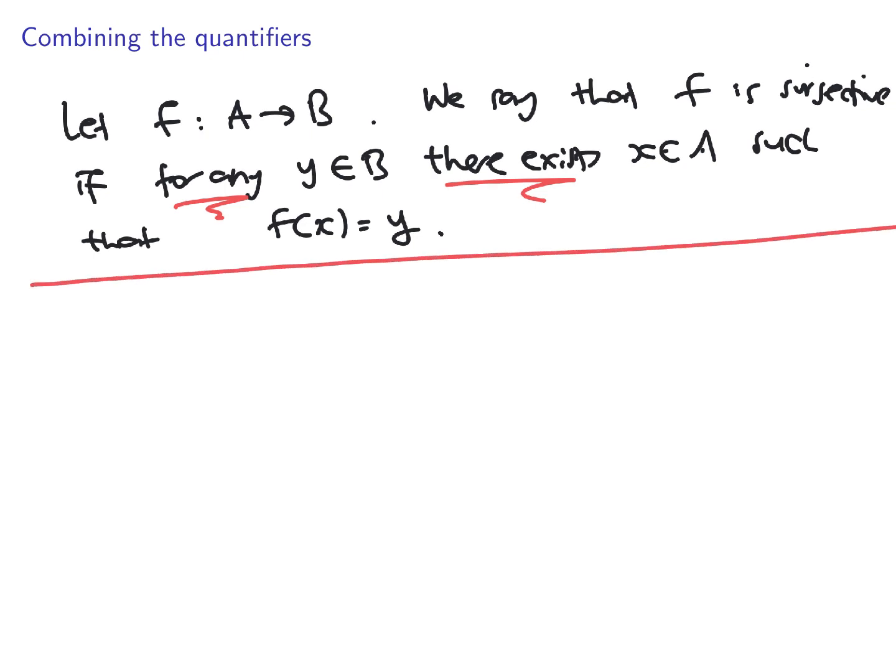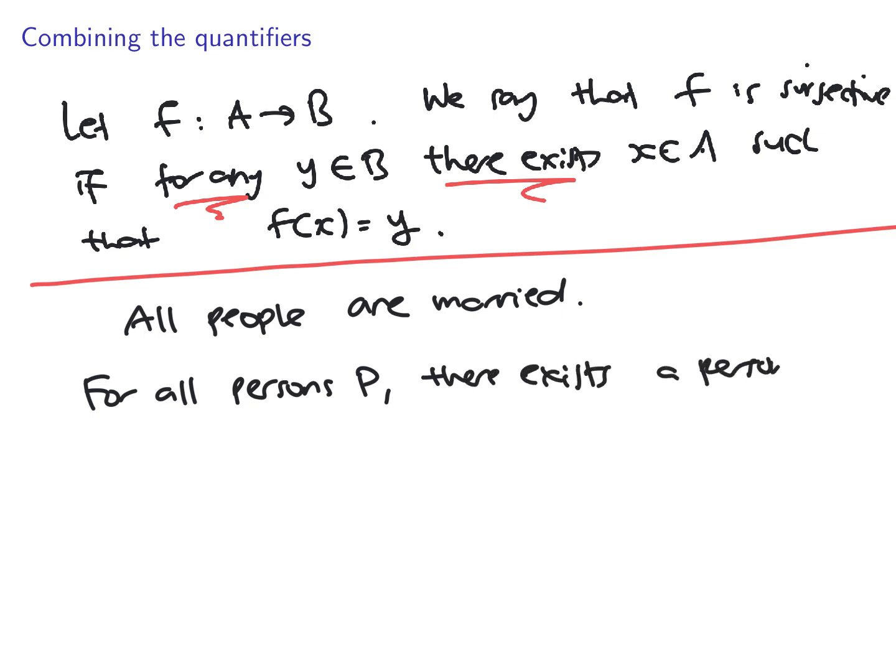I'm going to write the following statement: All people are married. Let's forget about whether this is true or false. Maybe false, because surely there are people who are not married. But you can rewrite this statement with quantifiers. How do we write this? Say that for all persons P, there exists a person Q such that P is married to Q. This is how we write it in this for all there exists form.